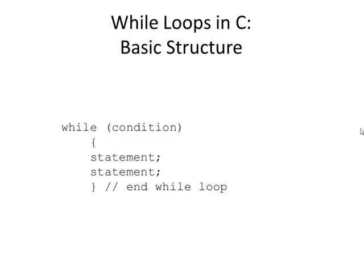So let's start out with the basic structure of a while loop. The while loop kind of looks like an if statement. You see that we have the word 'while' instead of 'if', we have a condition, and then surrounded by curly braces, we have the statements that we want to do. The difference between while and if is: if the condition was true, it would do the statements once and then skip to the end. With while, it does the statements and then comes back up and tests the condition again. While the condition is true, do these statements. If the condition is false, it skips over the loop.